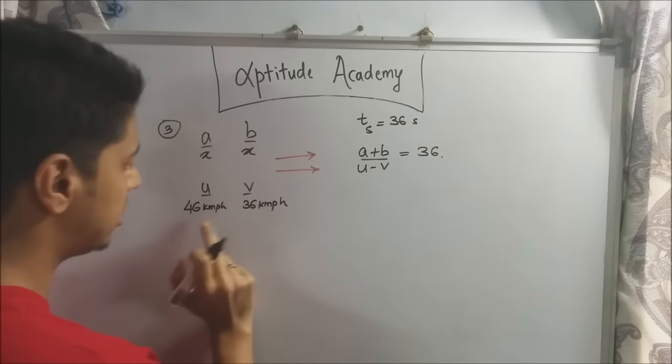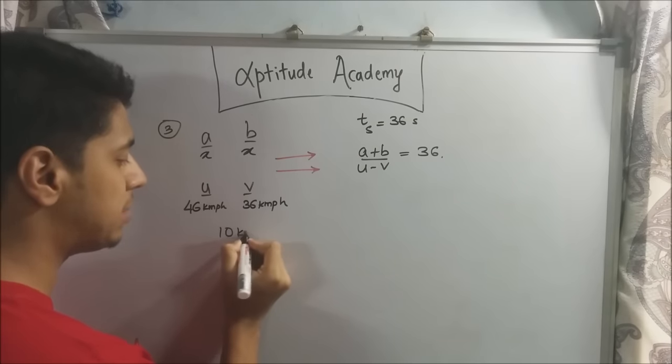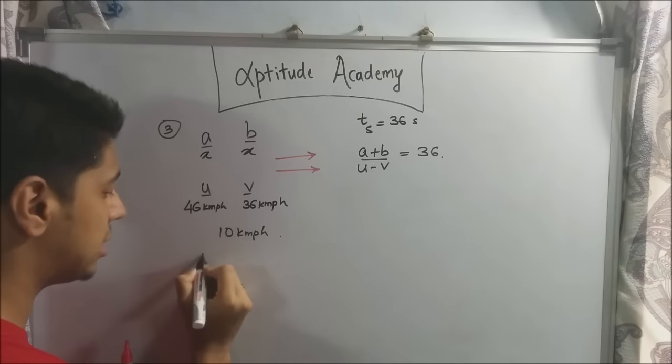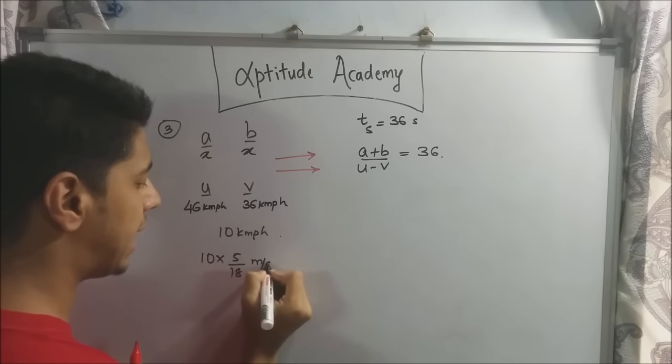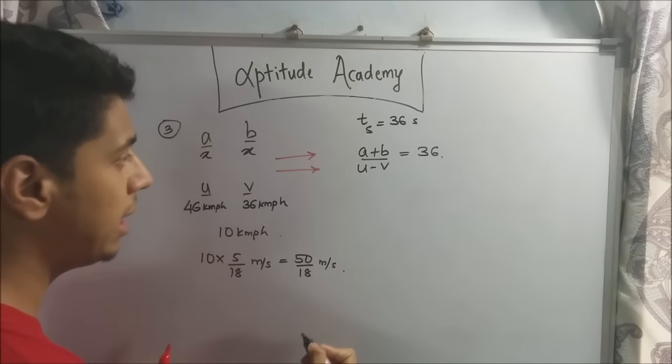Now, you know that U minus V. So, now you do it. 46 minus 36 is 10. So, 10 kilometers per hour. But you need it in meters per second. So, you will convert it. So, 10 into 5 by 18 meters per second. So, this is equal to 50 by 18 meters per second.